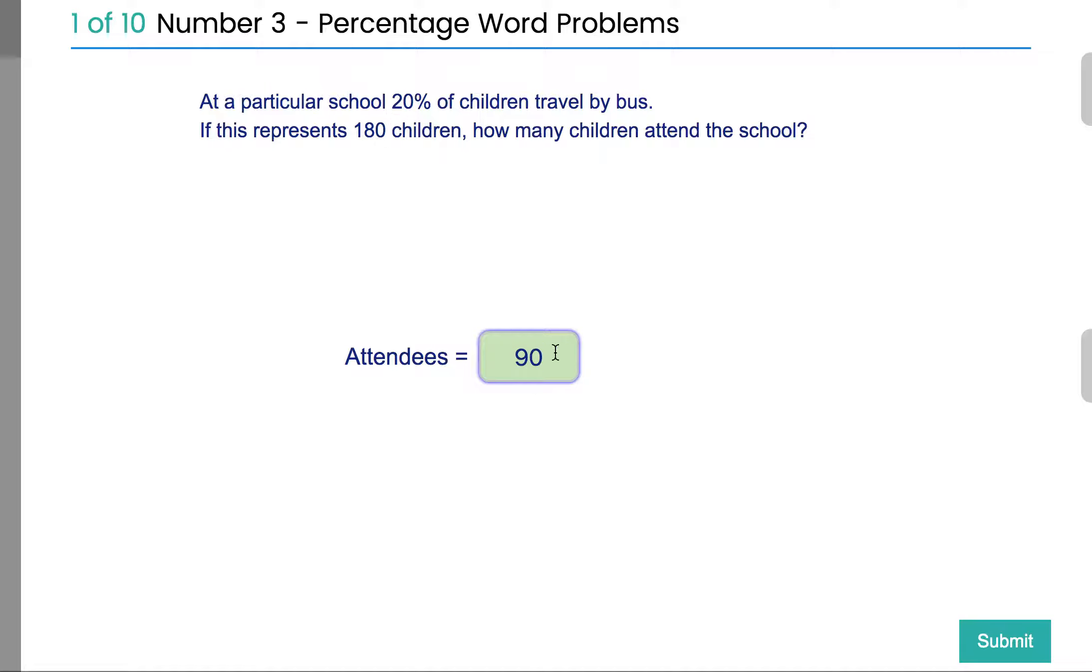So, if 10% is 90, how many in the whole school? Well, then it's just 10 lots of that, because if this is 10%, we need to know what 100% is. And 10 10s are 100. So we just times it by 10. And to do that, we just move the decimal point one place along. So 90 times 10 is 900. So we did that by calculating what 10% was first.